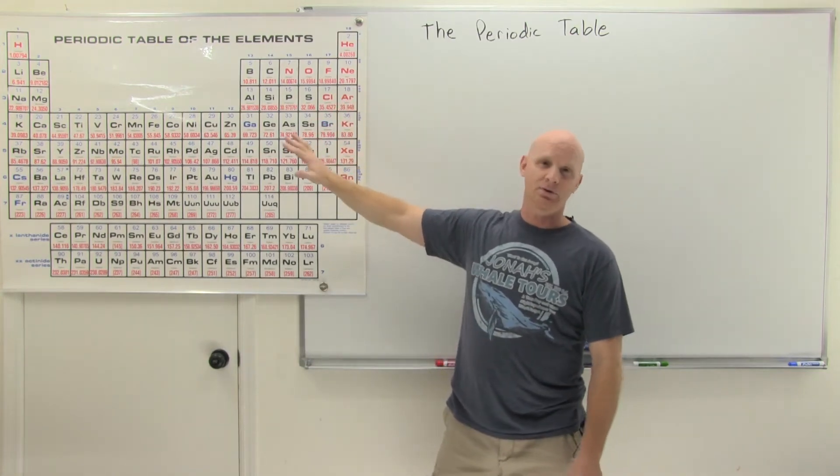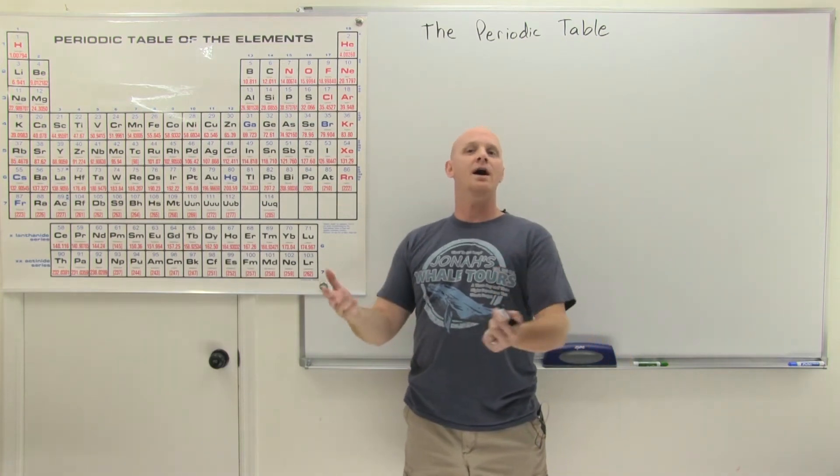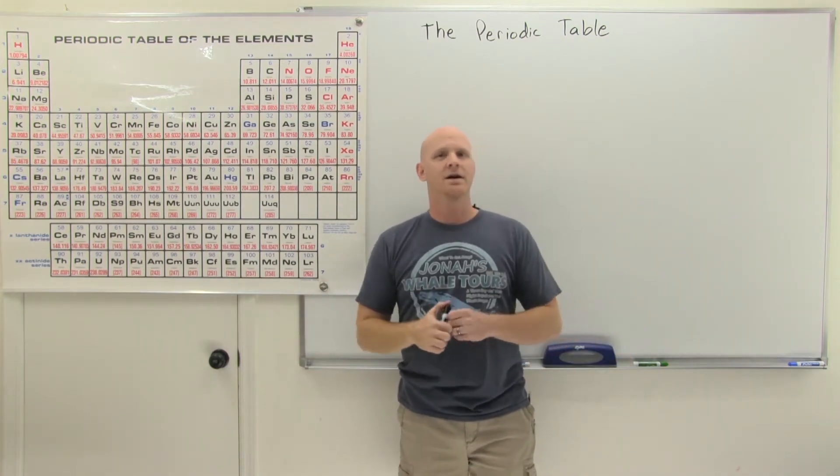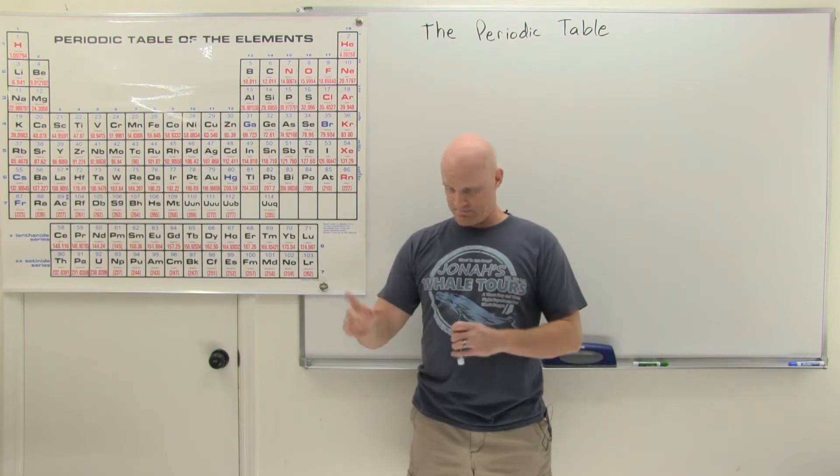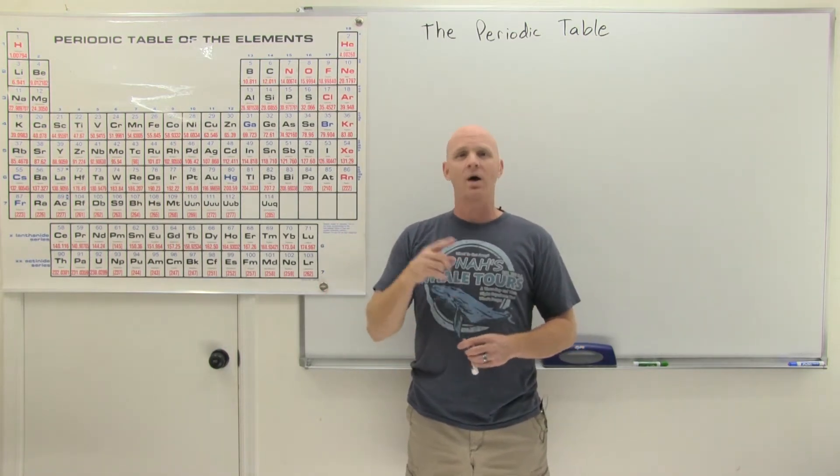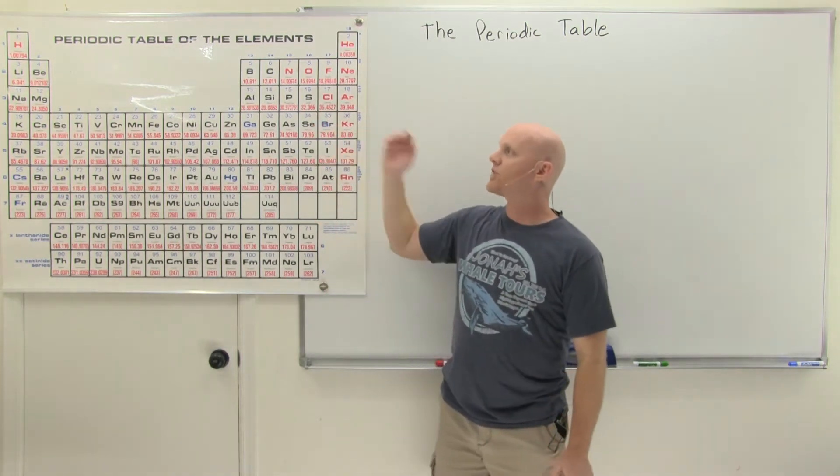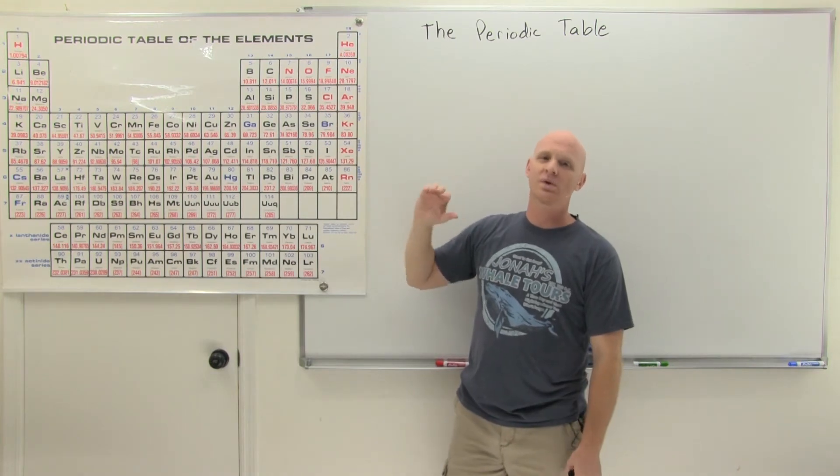Now, they call this the periodic table. So when you think of something that's periodic, something that happens periodically, you might think of the sun rising. It happens on a cycle, happens every 24 hours, so to speak. So the periodic table is called periodic for a reason.